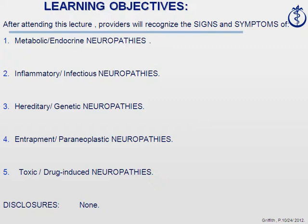Good afternoon. Today's talk will be about peripheral neuropathy, and we have five learning objectives to cover in the next 45 minutes. The types of neuropathies you're expected to recognize in clinic or the hospital are: metabolic or endocrine, inflammatory or infectious, hereditary or genetic, entrapment or paraneoplastic, and toxic or drug-induced.